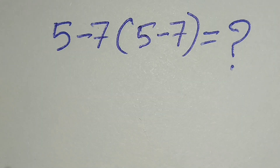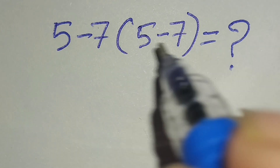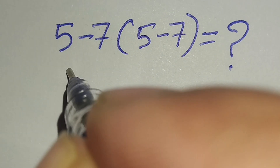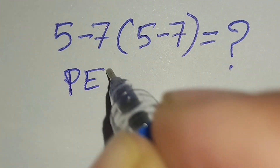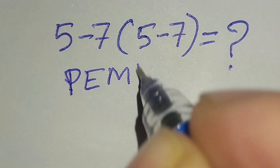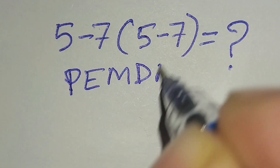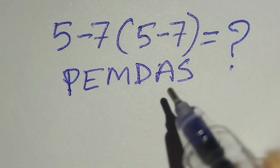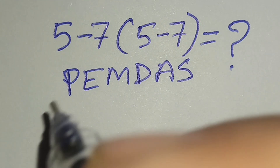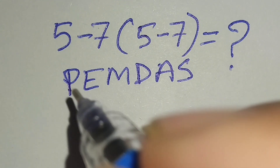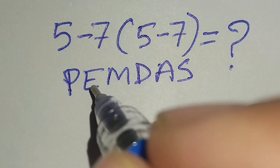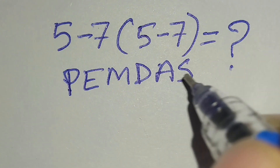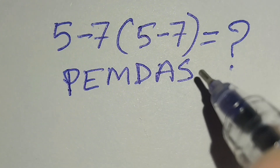Now I will apply the PEMDAS rule to solve this math correctly. According to PEMDAS rule, at first we have to work with parentheses, then exponent, then multiplication or division, then addition or subtraction.